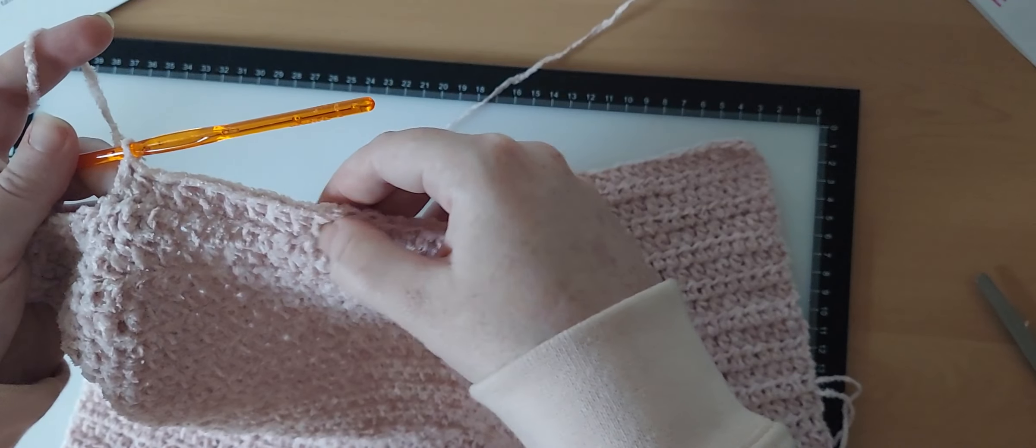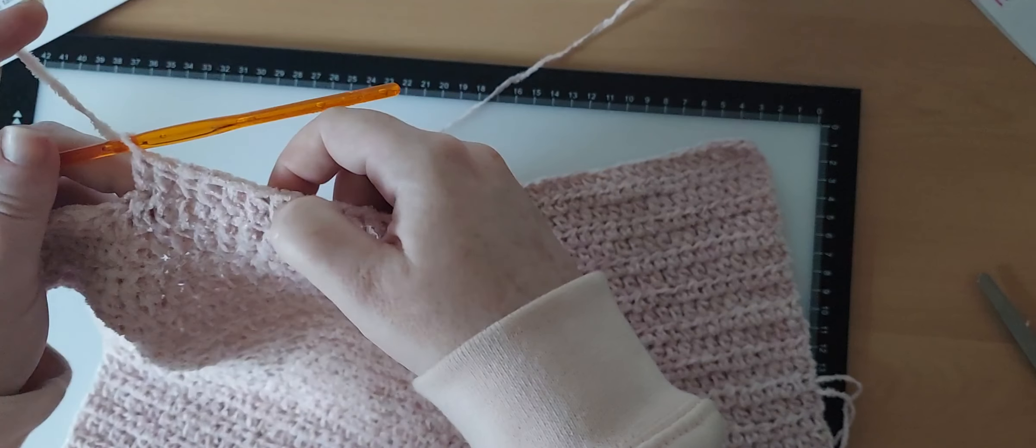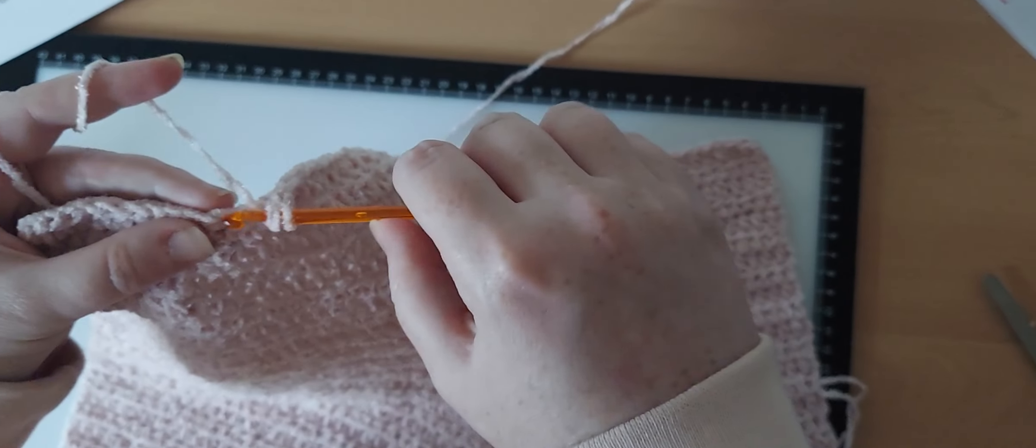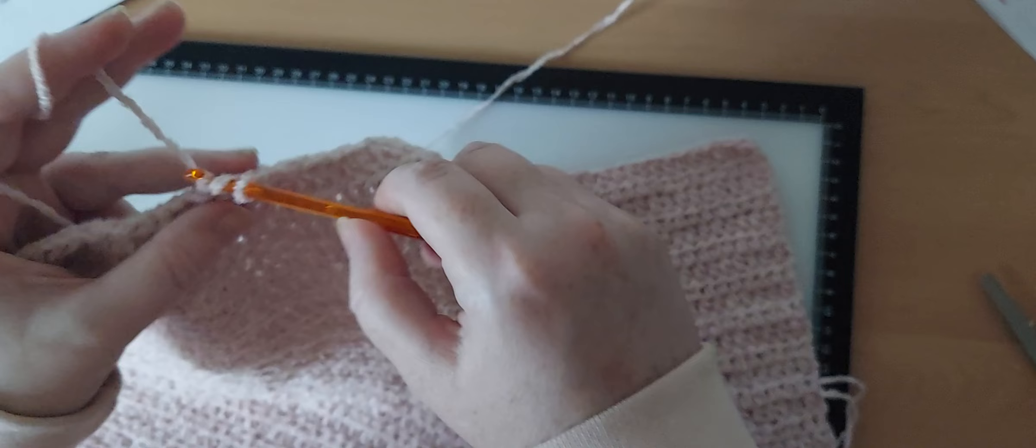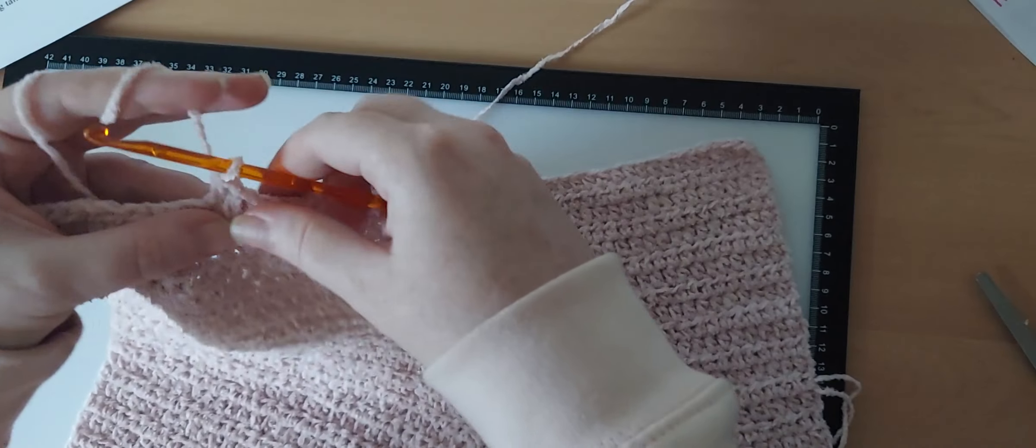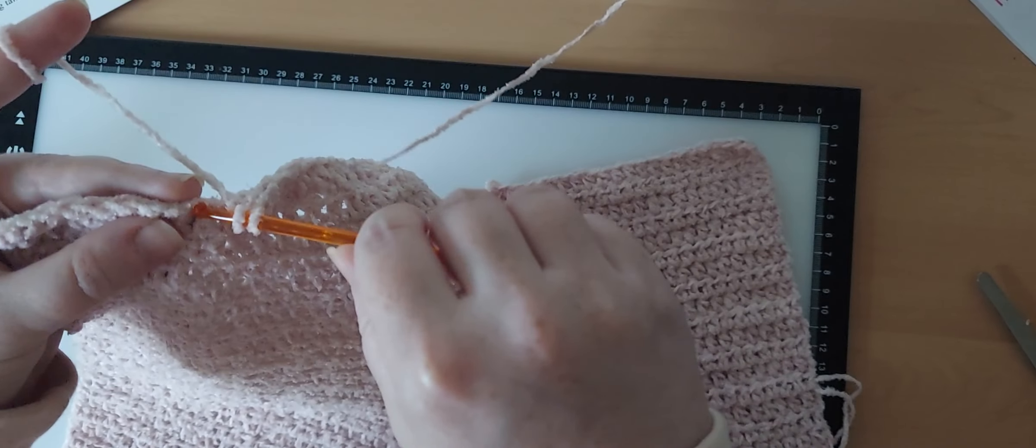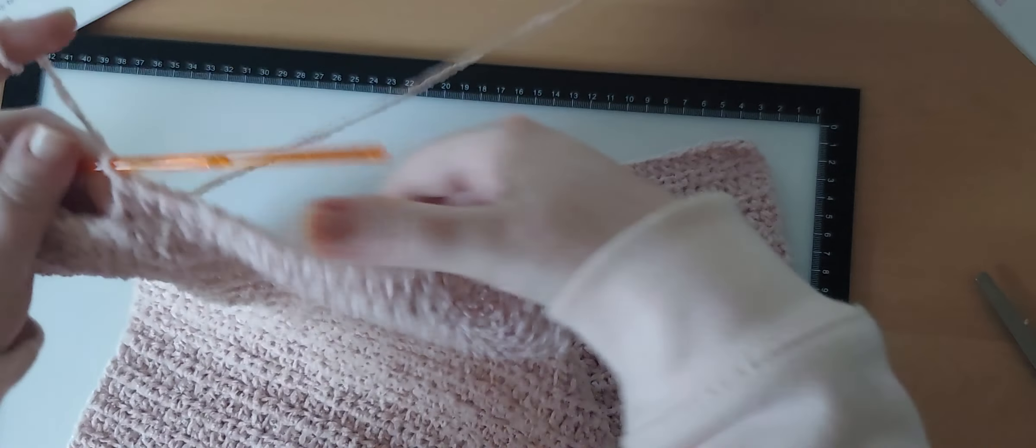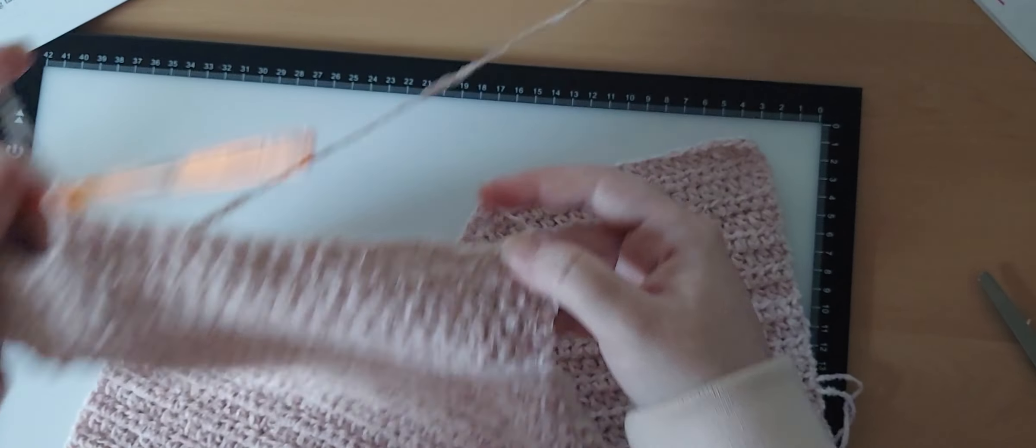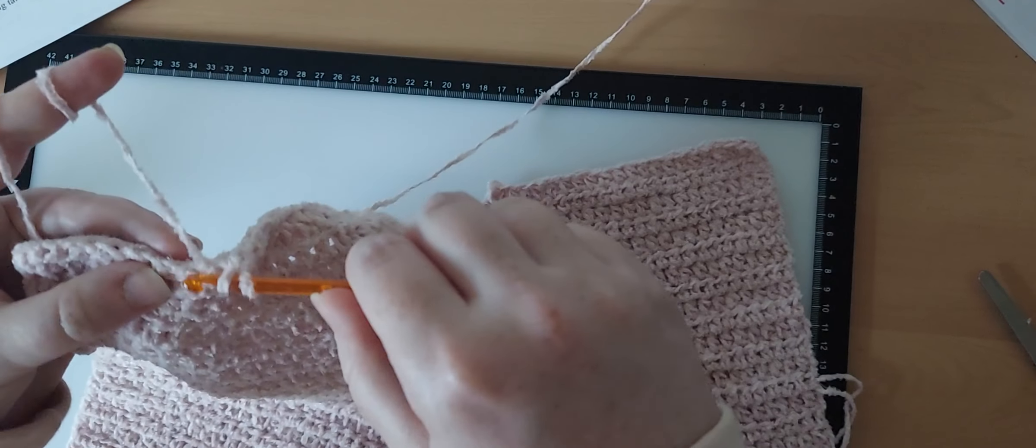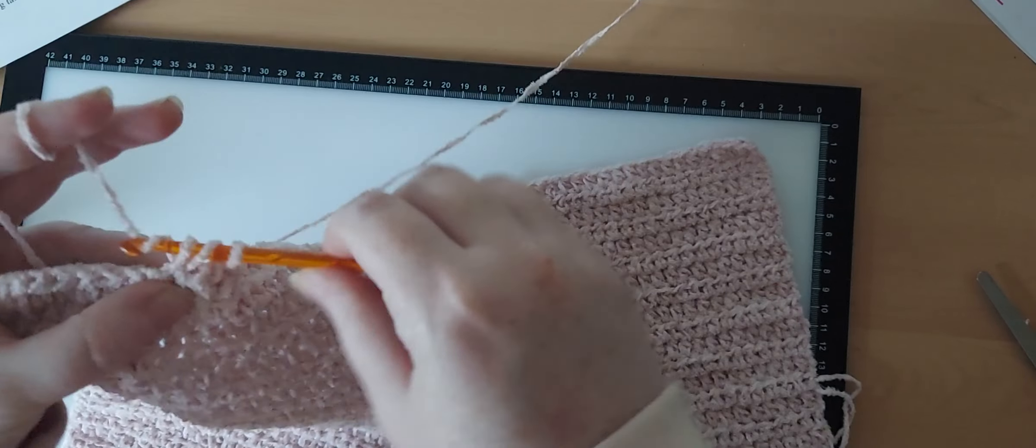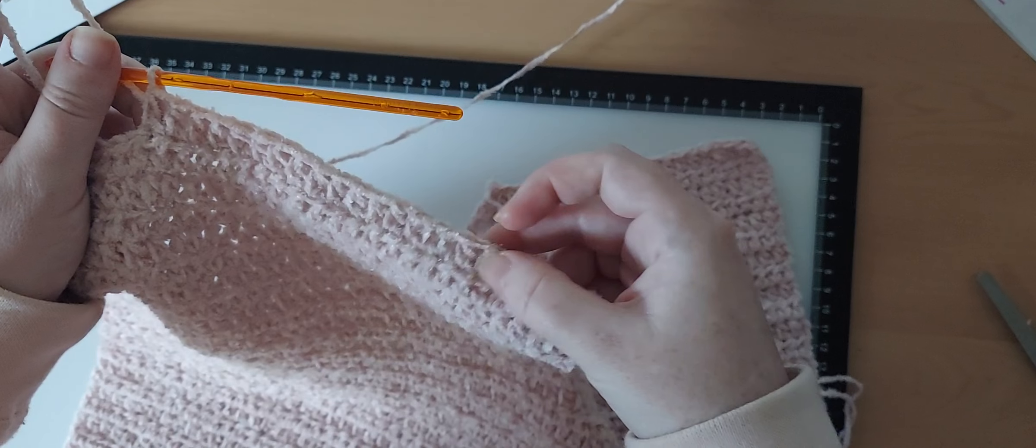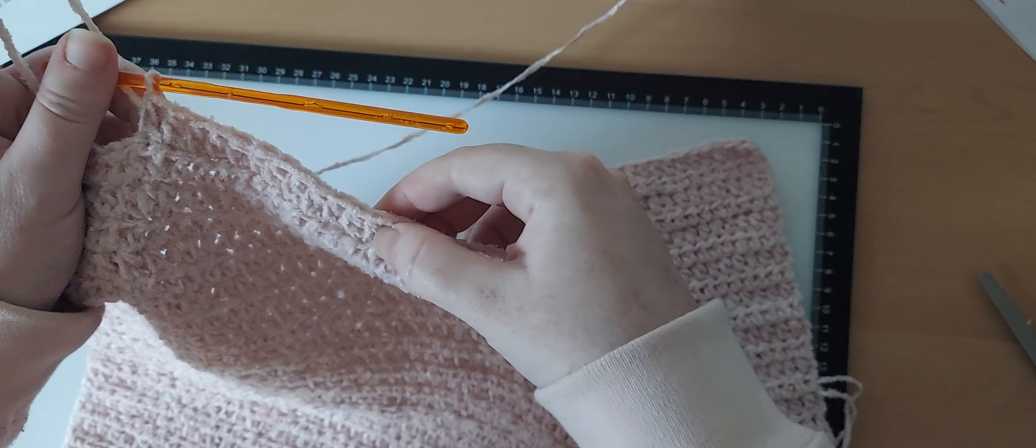These 5 slip stitches did not count. So that means we are at 1, 2, 3, 4, 5, 6, 7, 8, 9, 10, 11, 12, 13, 14, 15, 16. This is the importance of making sure you read the pattern correctly and count your stitches. Because I assumed, wrongfully, that we counted these as stitches, and it literally says in the pattern that we do not.